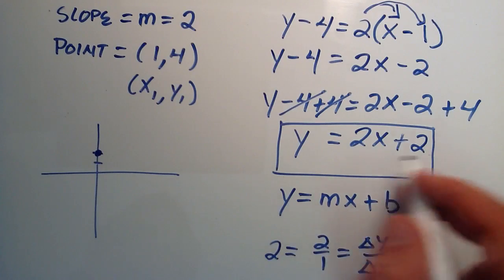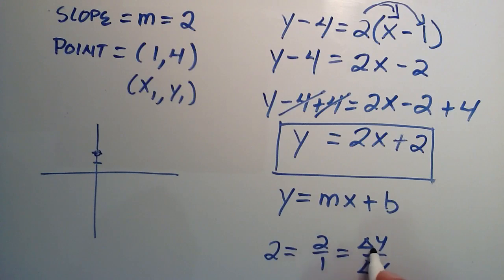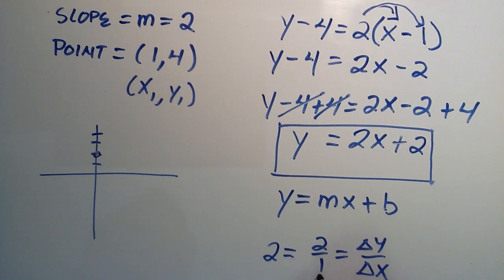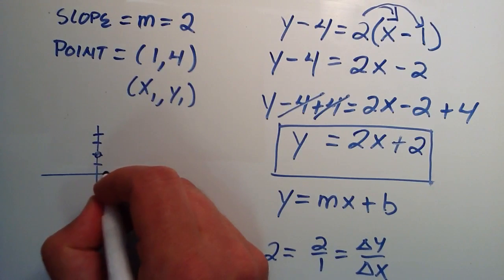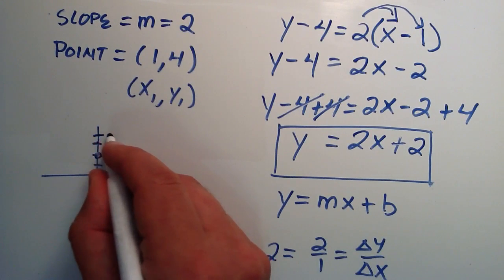So we know that the b is a point on our line which lies on the y-axis. Then we just need to go up 2 units in the y direction from there, so 1, 2. And we need to go over 1 unit in the x direction from there. So up 2, 1, 2, over 1 in the x.